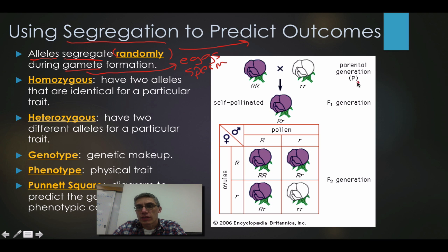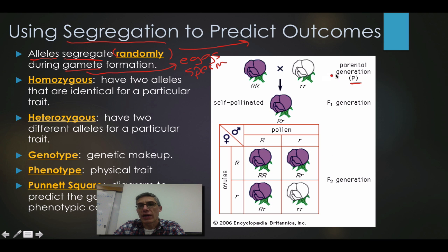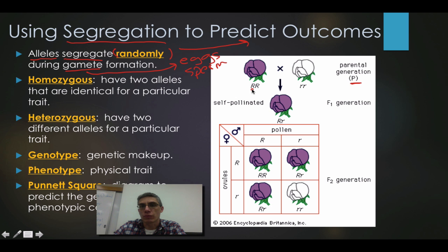If you look over here on the right, this is going to be considered our parental generation. Remember back in 11.1, we talked about the P generation and the F1 generation. That P generation is going to be the original parents that we start off with. What I mean by the allele separating is that we have two copies of every gene — two alleles. When we produce gametes, when we produce eggs or sperm, those alleles will separate because you can only pass one on to your offspring.